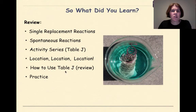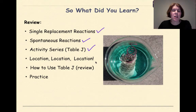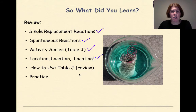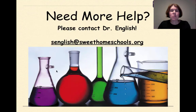So what did you learn in this tutorial? We went over the concept of single replacement reactions, talked about spontaneous reactions, looked at our activity series — Table J — and talked about metal location and how that influences whether something's going to be oxidized or reduced. We did a review on how to use Table J and then did some practice at the end. Need more help? Feel free to contact me. Have a great day.